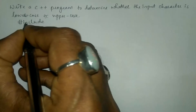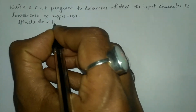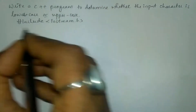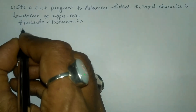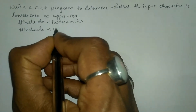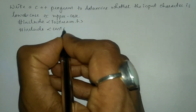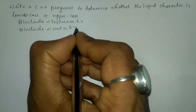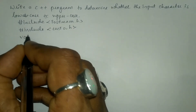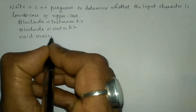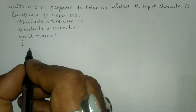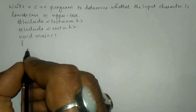Let us write the preprocessor directives: hash include in angular brace iostream dot h header file, and the next preprocessor directive is hash include in angular brace conio dot h header file.